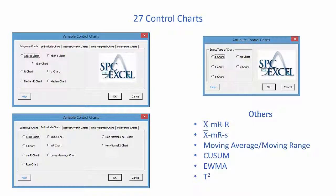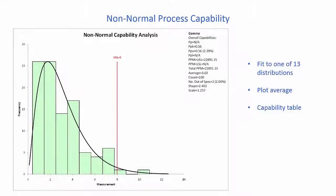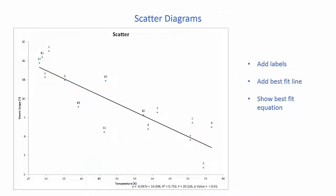27 control charts are all in the SPC for Excel package. Process capability where you can add plus or minus three sigma lines, plot the average, and of course we've added non-normal process capability as well, fit to one of 13 distributions.